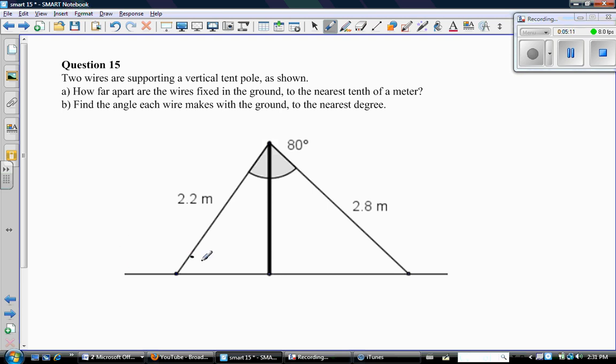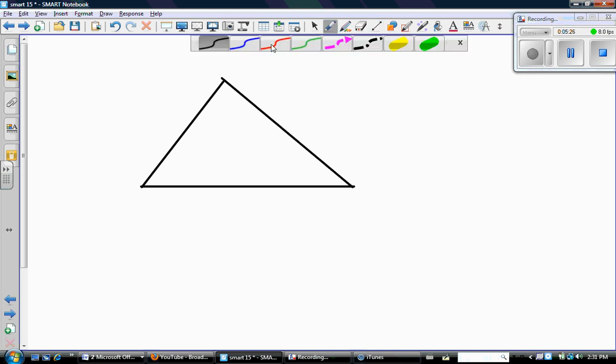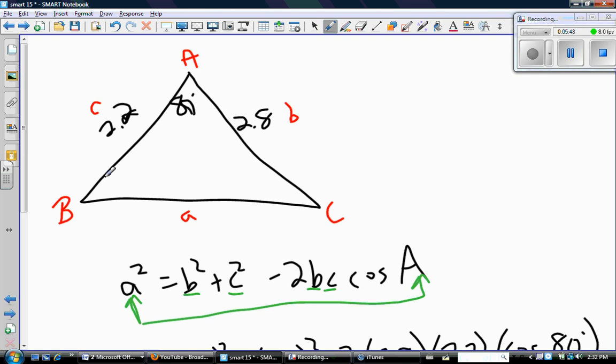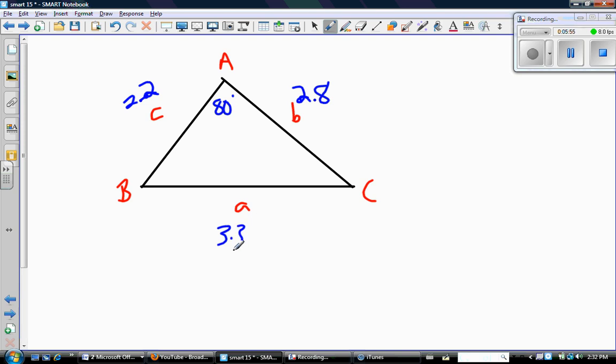So let's redraw all the information we have. Oh, let's be a little neater this time. And we had labeled this A, B, C, and therefore this is little a, little b, and little c. And we know the following values: we know that this is 80 degrees, we know that this side is 2.2 meters, we know that this side is 2.8 meters, and we've just found that the length of a is 3.3 meters. Okay.